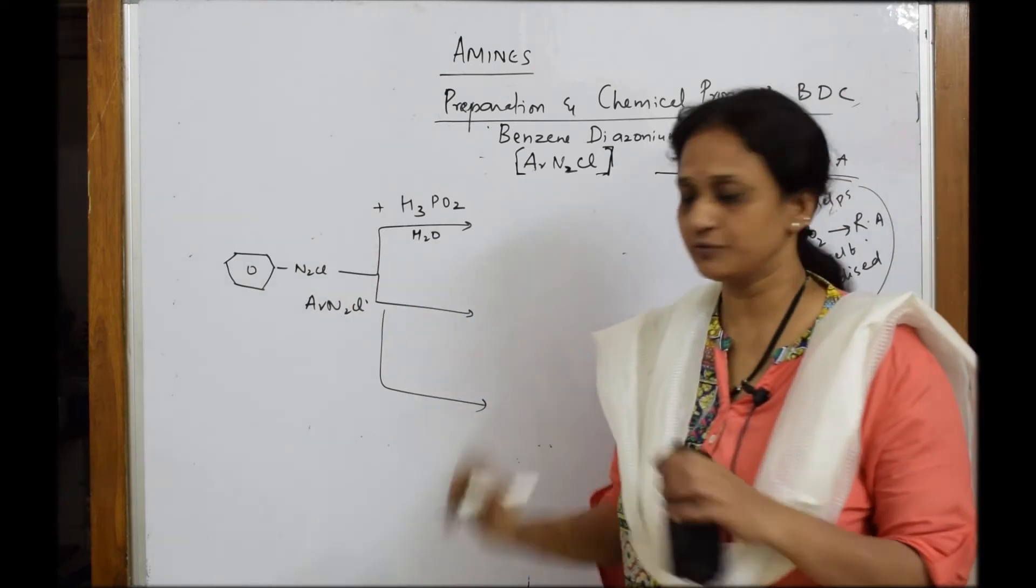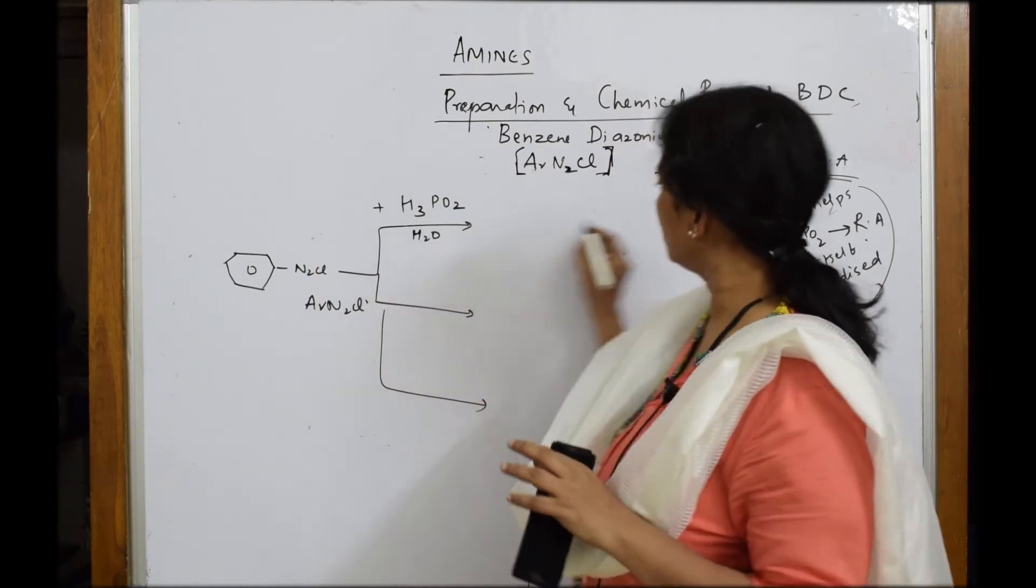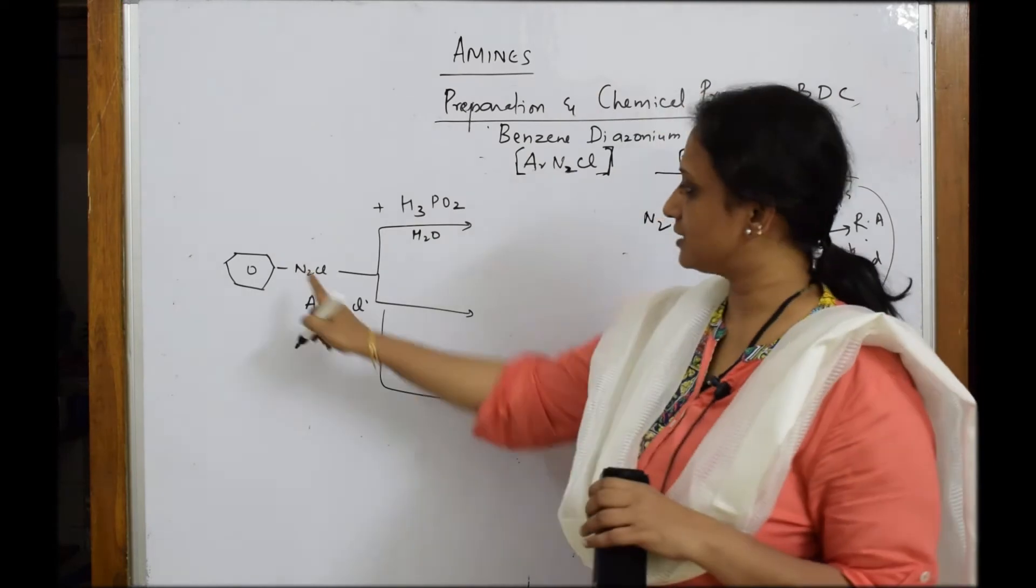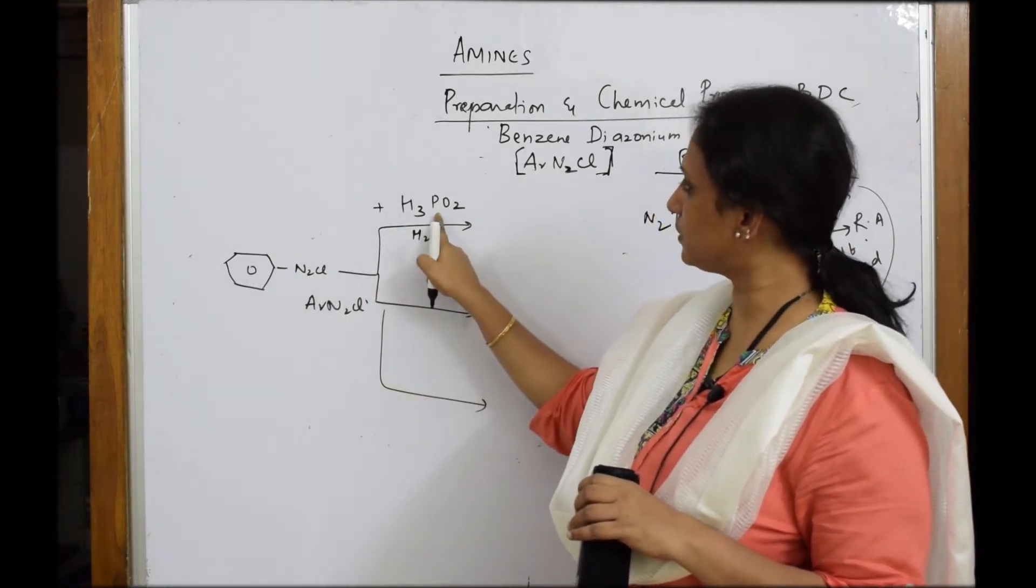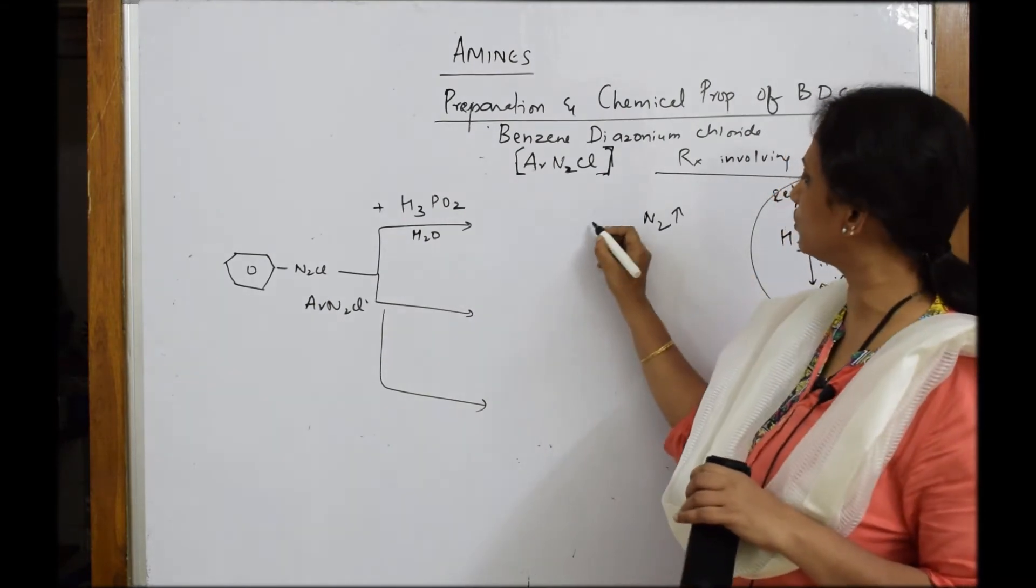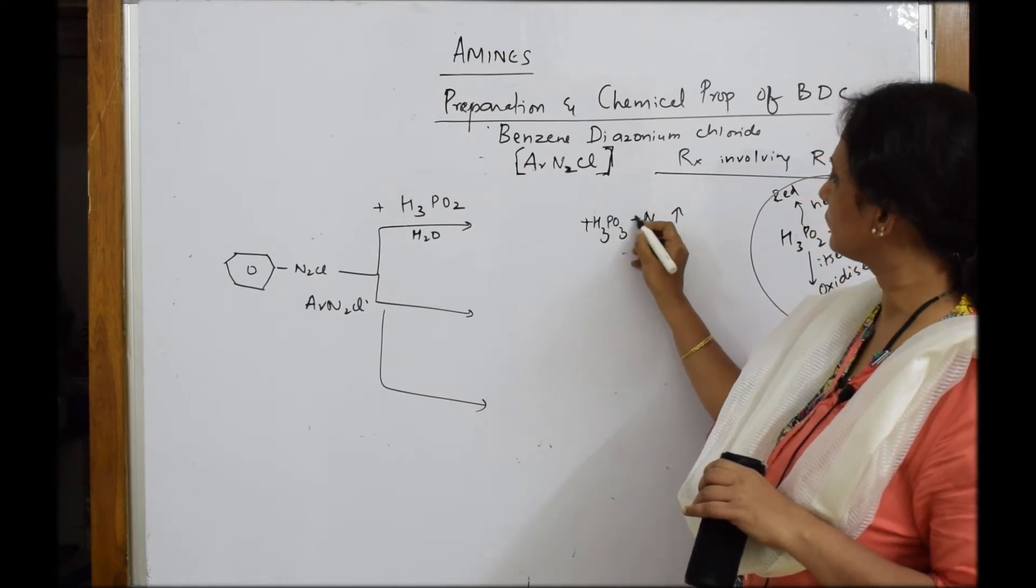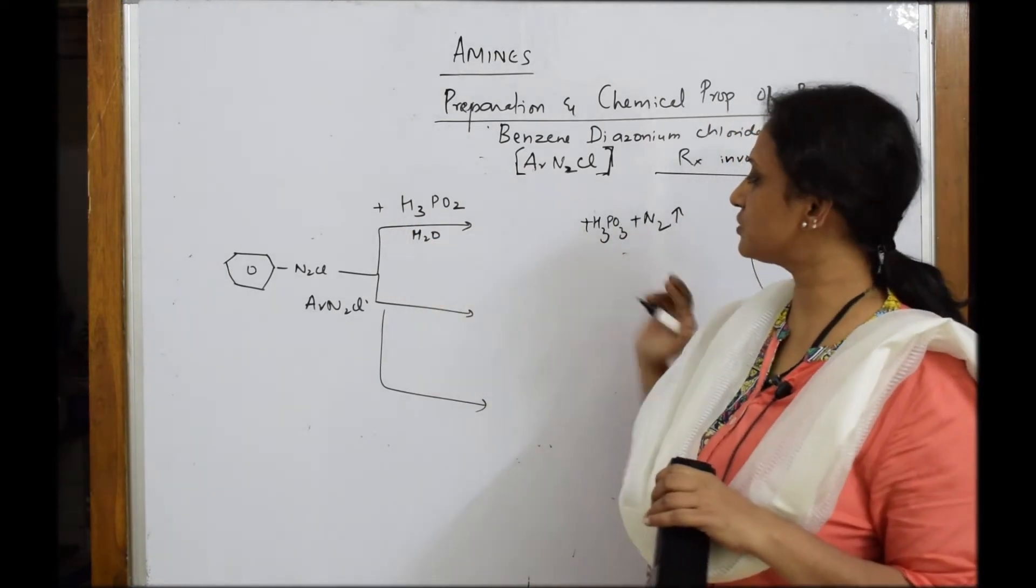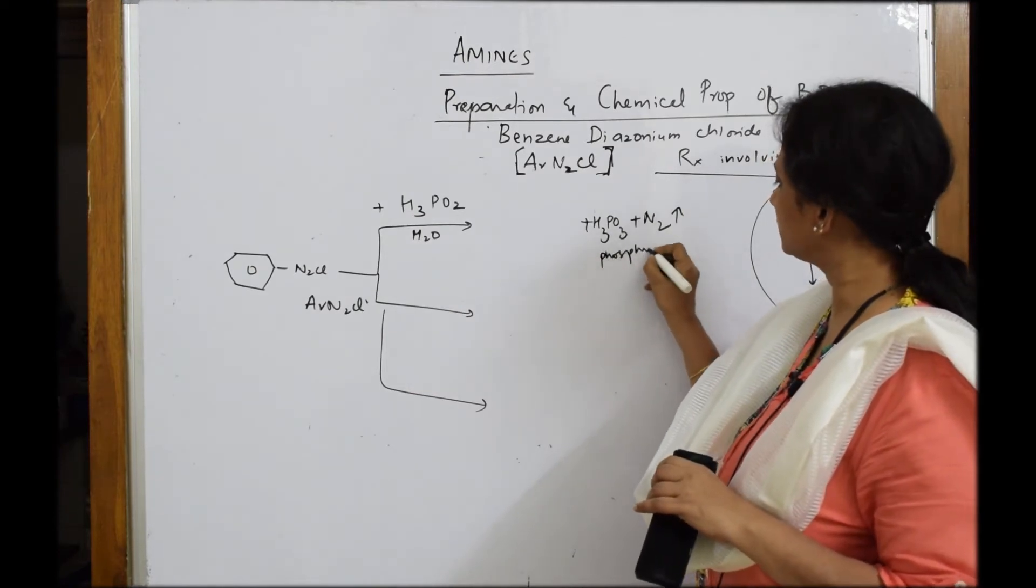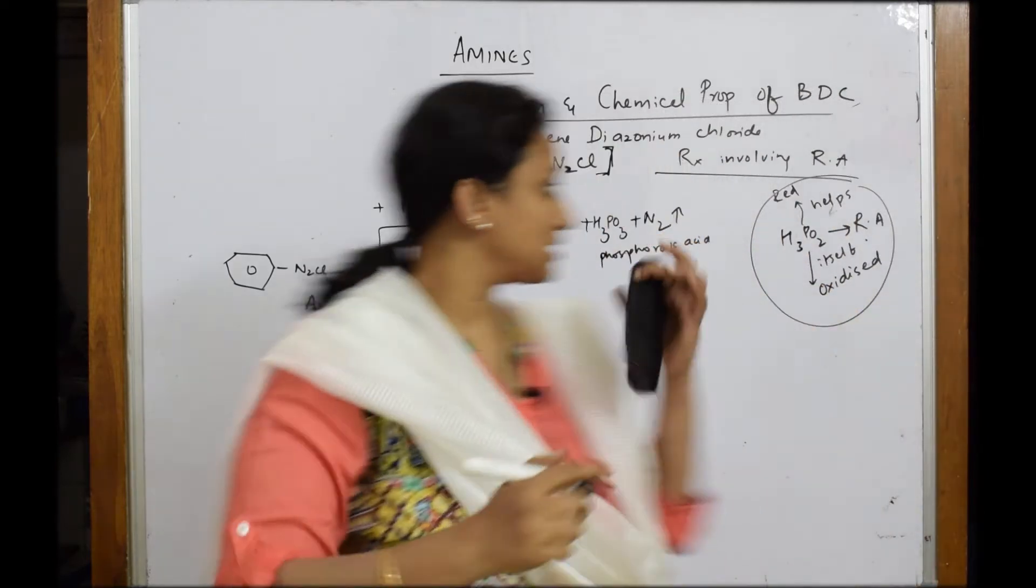Now H3PO2 when you add it, first important thing - whenever you're heating BDC just remember nitrogen gas escapes out. That is the most important thing. After that your H3PO2 gets oxidized to a higher oxidation state from PO2 it gets oxidized to H3PO3, phosphorous acid. Hypophosphorous acid - this is phosphorous acid. Let us write the name, phosphorous acid. Oxidized to higher O2 to O3. Still not complete.